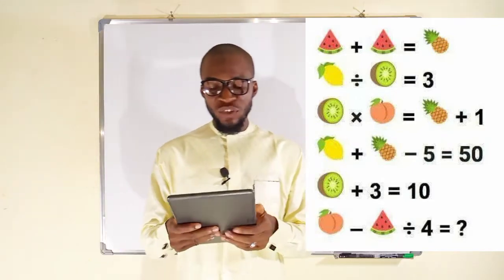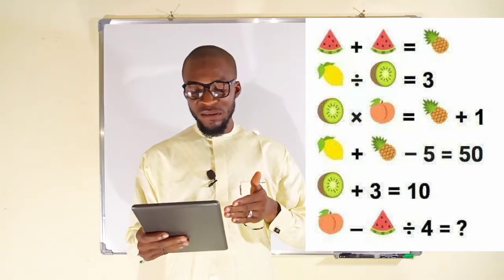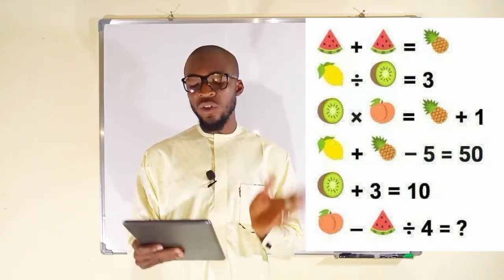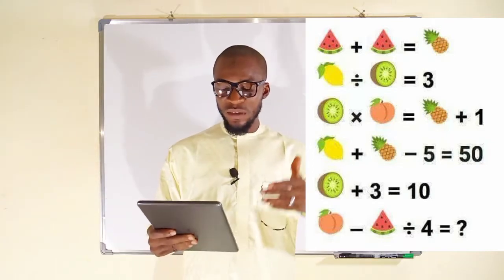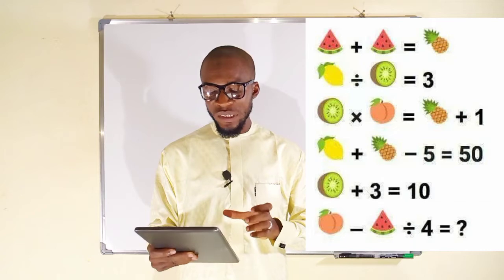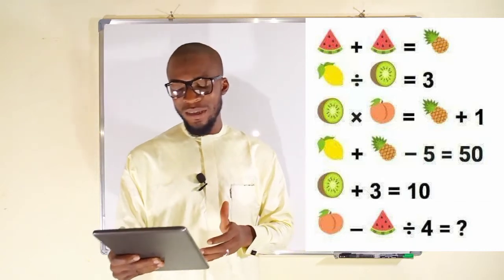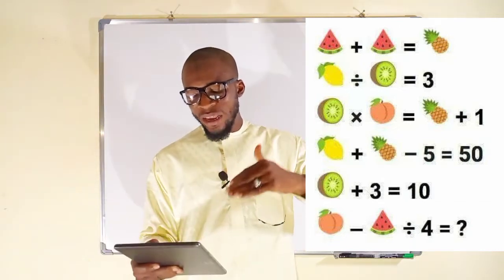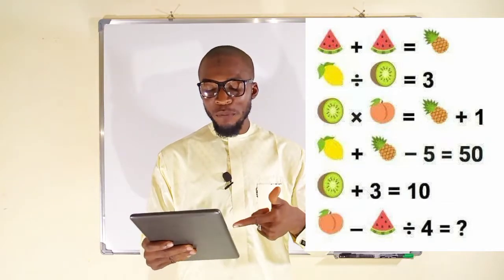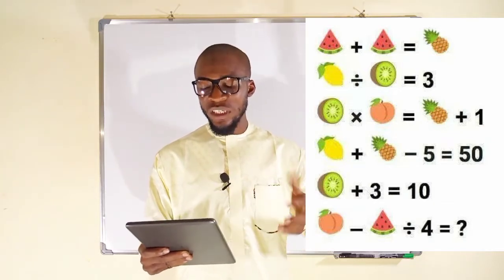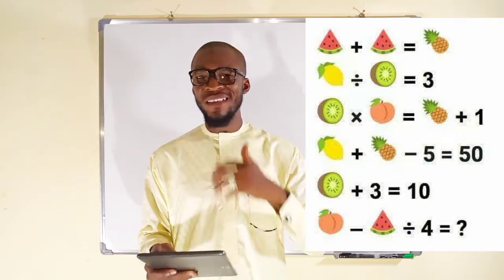The fourth equation you can see here, it is a guiding egg plus pineapple minus five equal to 50. And the fifth equation, it is a slice of lemon plus three equals 10. But our main target is to find a solution to an apple minus a slice of watermelon divided by four. What will this give us?